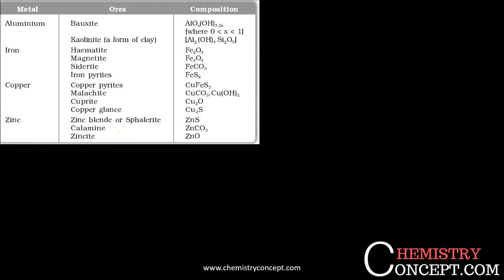As mentioned, metals are found in the form of ores. For example, aluminium is found in the form of bauxite and kaolinite — these are the ores for aluminium. Iron is found in the form of hematite, magnetite, siderite, and iron pyrites. These are the ores in which iron is found. This is the composition for aluminium and this is the composition for iron.